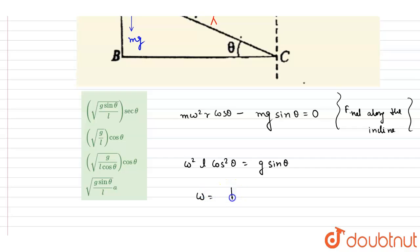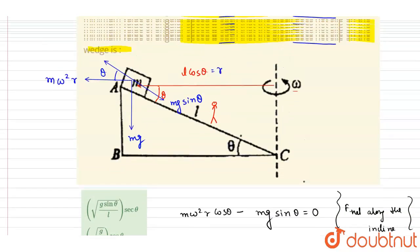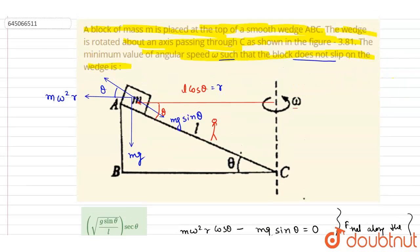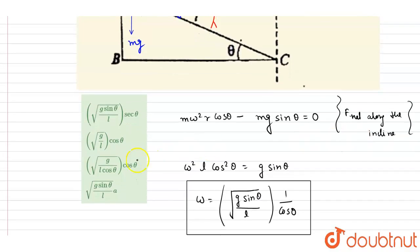you got omega equals under root of g sin theta by l cos square theta. This is square here, so it will be outside with one power. This will be the omega value for which the block will not slip with respect to the wedge. Now you can check for the option: under root g sin theta by l, one by cos theta. So A will be the correct answer. Thank you.